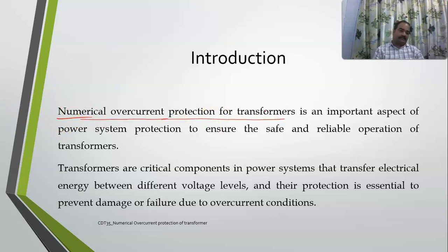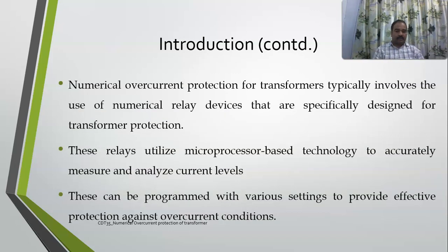Numerical overcurrent protection for transformers is our topic today. It is an important aspect for protection of power system components, particularly transformers, to ensure they operate safely. Transformers are the most critical components in power systems — they transfer electrical energy from one circuit to another without direct electrical connections. If anything happens to the transformer there will be a big loss to customers and generating stations, which is why we need to protect them against overcurrents. Numerical overcurrent protection employs numerical relay devices exclusively designed for transformer protection.